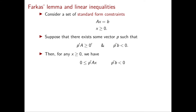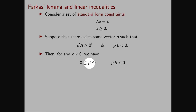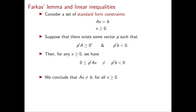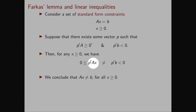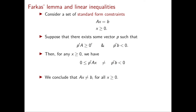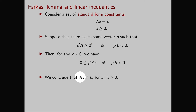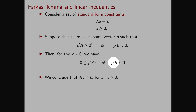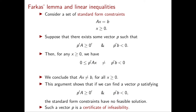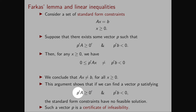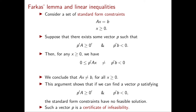Consider the quantity p^T Ax. We know that p^T A ≥ 0, and so if we assume that x ≥ 0, this product is greater than or equal to 0. On the other hand, we're assuming that p^T b is strictly negative. So we can conclude that p^T Ax for any x ≥ 0 is different from p^T b. This directly implies that Ax ≠ b for all x ≥ 0. In fact, if we multiply both sides of Ax = b by p^T, we obtain p^T Ax on the left and p^T b on the right. So this argument shows that if we can find a vector p satisfying p^T A ≥ 0^T and p^T b < 0, then the standard form constraints have no feasible solution.